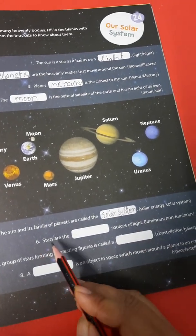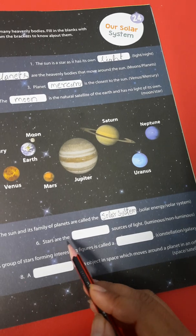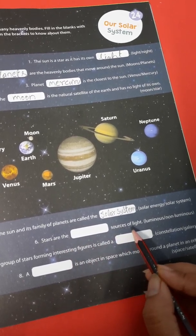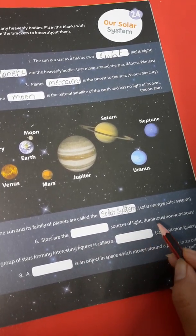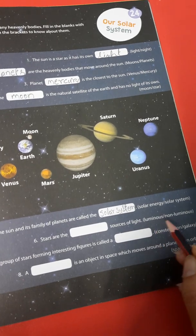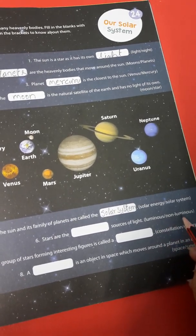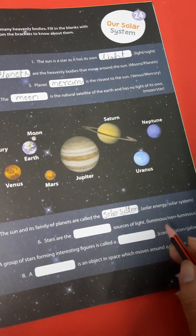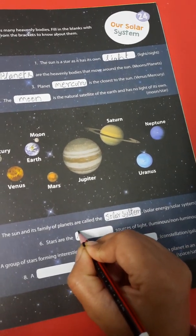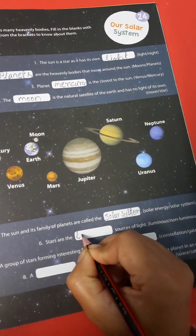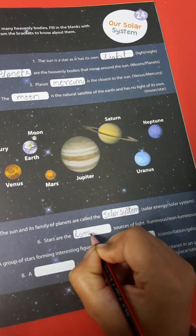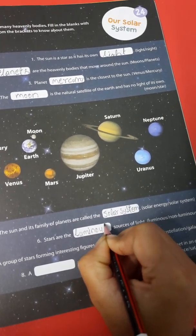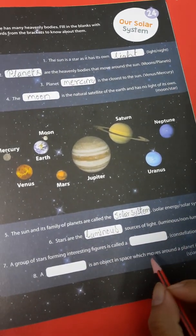Number 6. Stars are the dash sources of light. Luminous or non-luminous? It's luminous. You write here: L-U-M-I-N-O-U-S. Luminous.